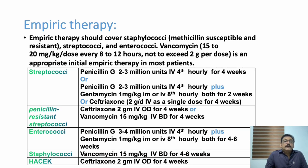For suspected streptococcal endocarditis: Penicillin G 2–3 million units IV every 4 hours for 4 weeks, plus Gentamicin 1 mg/kg IM or IV every 8 hours for 2 weeks. Alternatively, Ceftriaxone 2 g/day IV as a single dose for 4 weeks. For penicillin-resistant cases, use Ceftriaxone or Vancomycin. The principle is one antibiotic for gram-positive and one for gram-negative coverage.